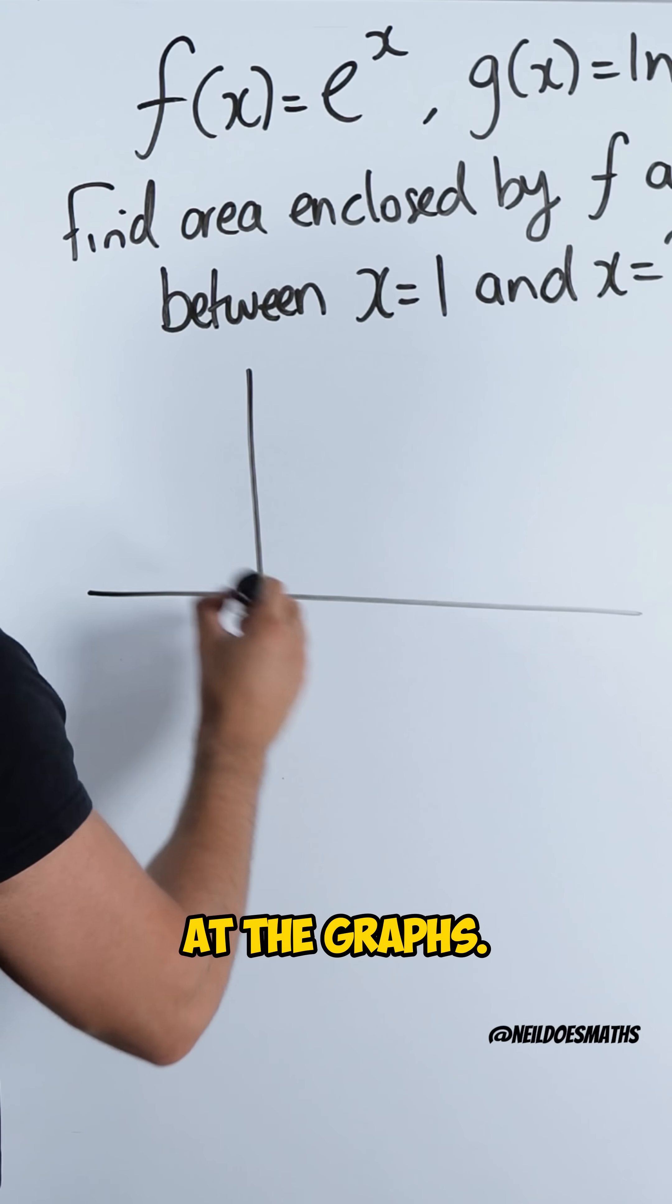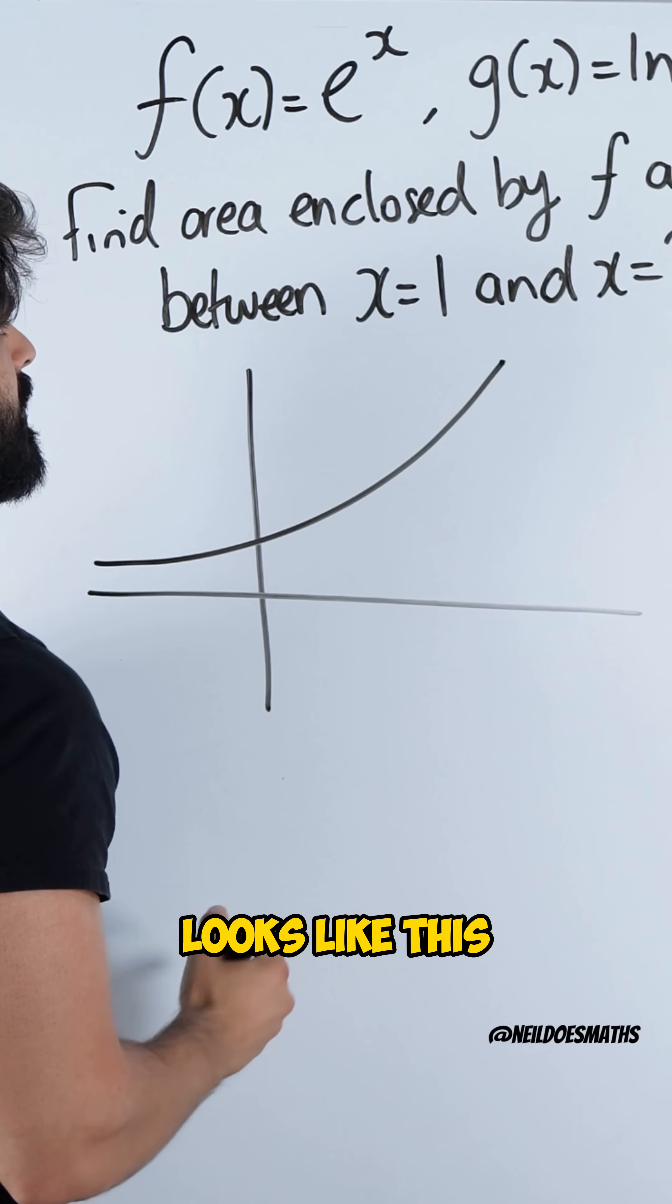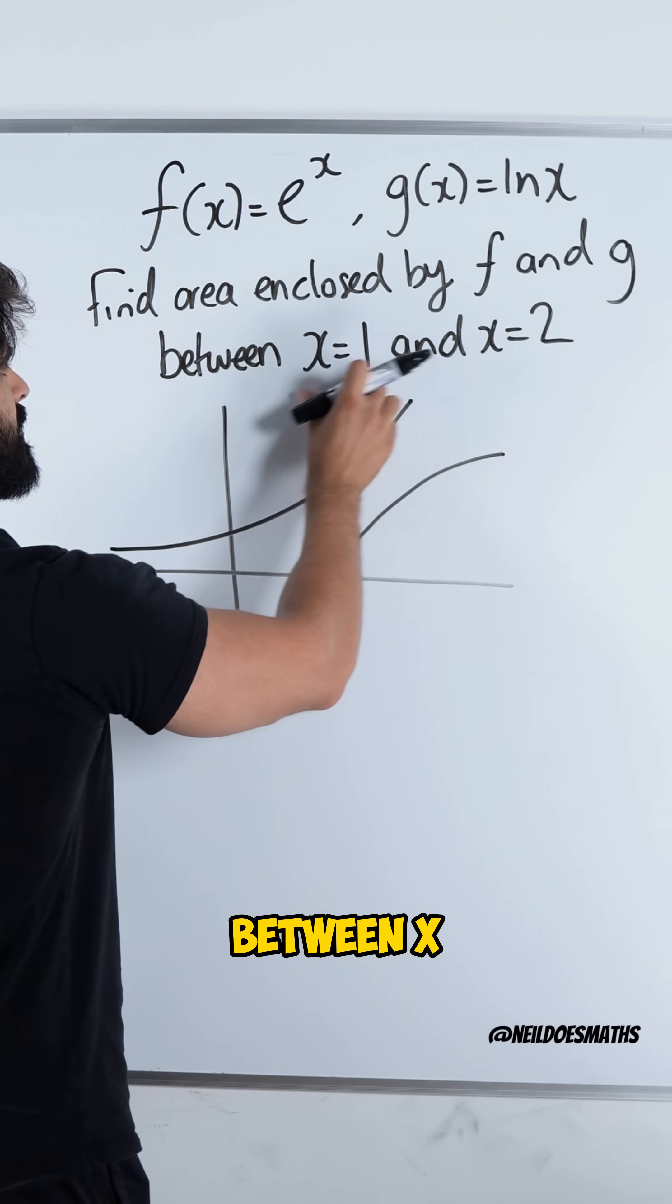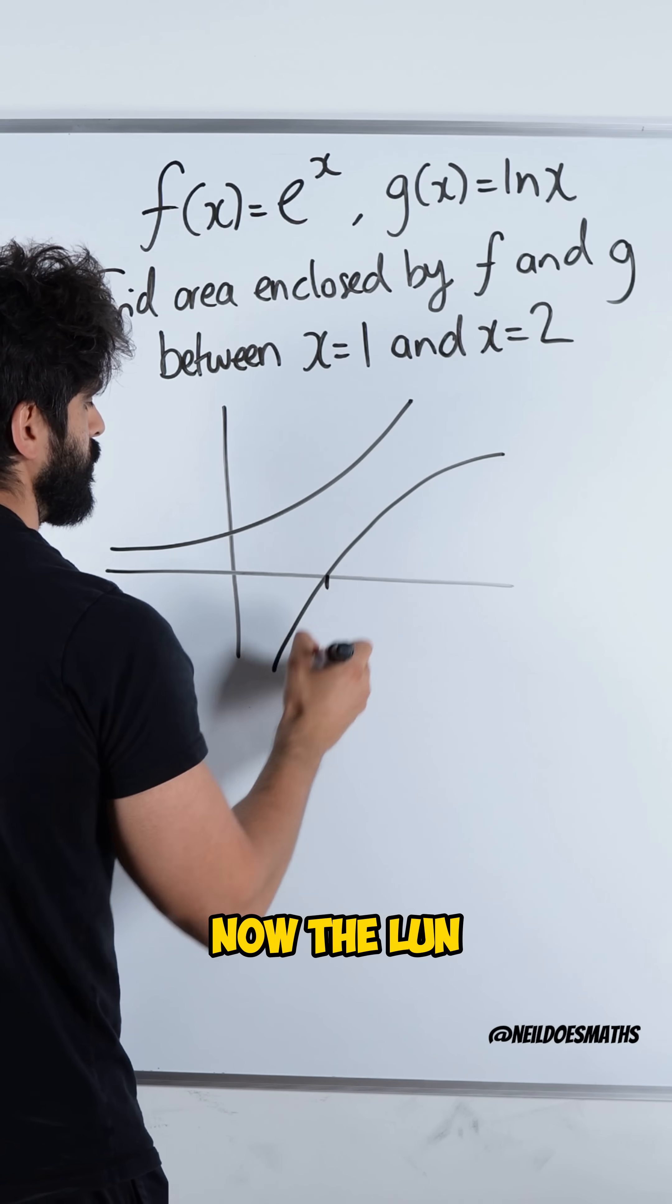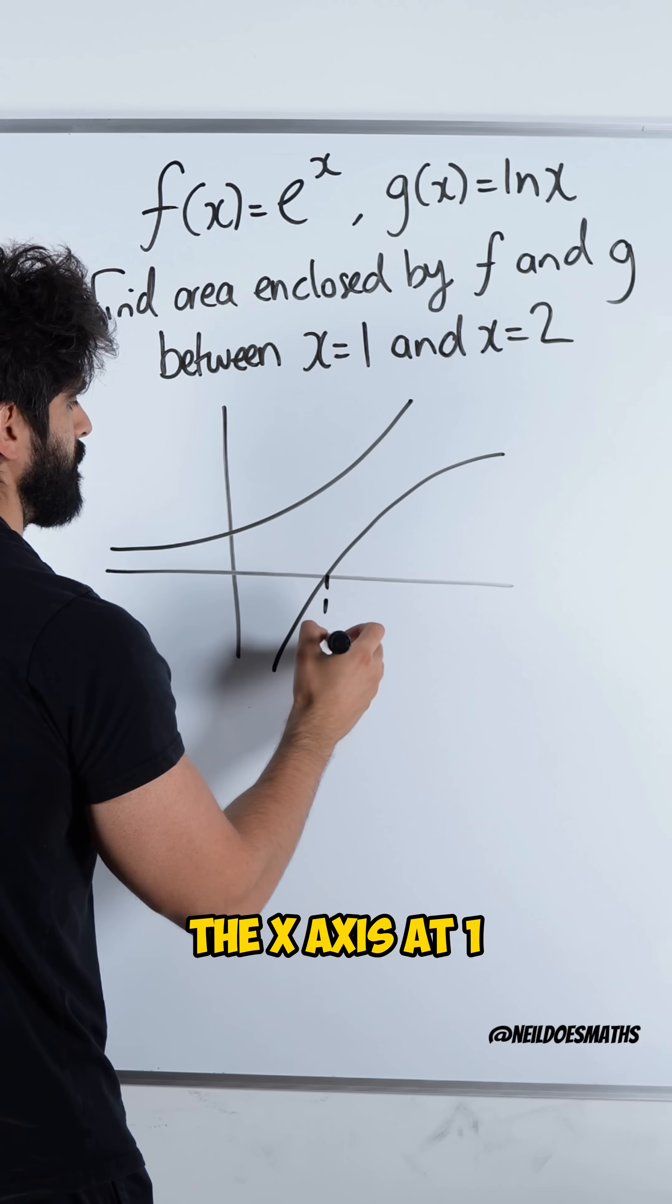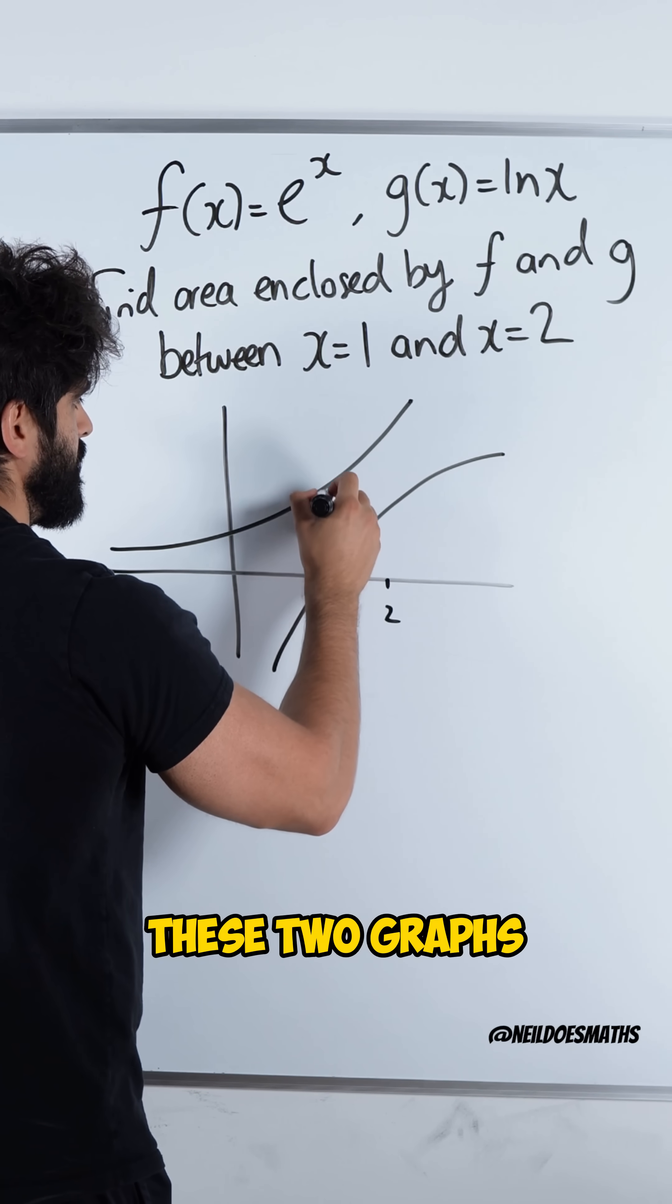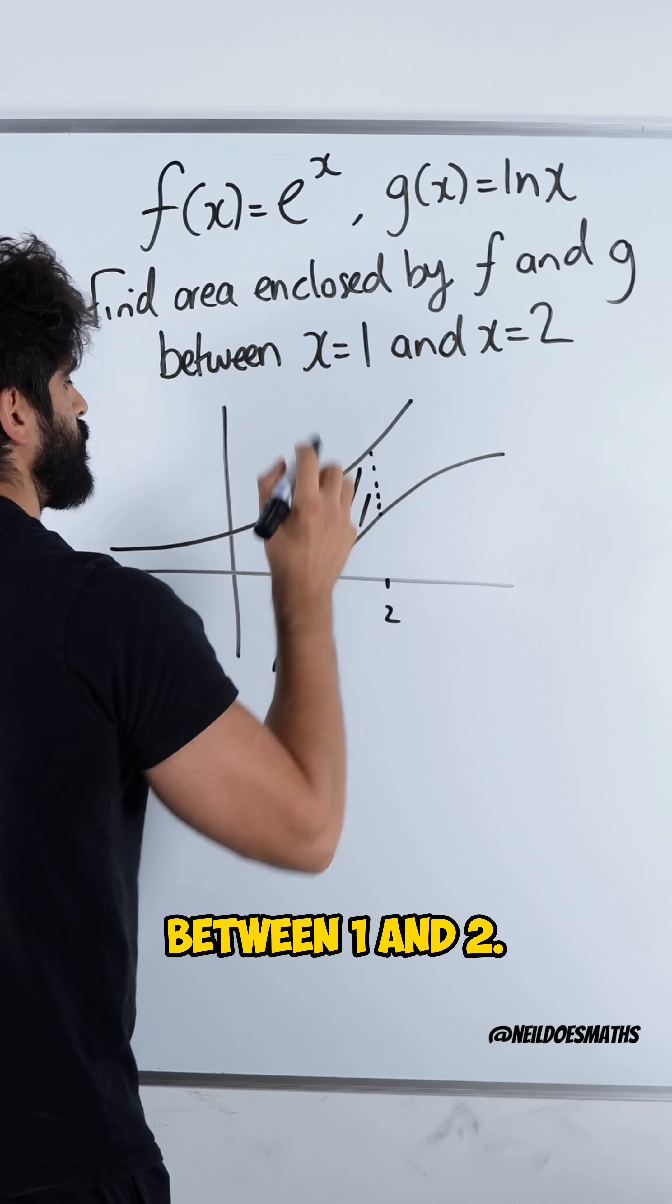So find the area enclosed by the function f and g between x equals 1 and x equals 2. Now let's take a look at the graphs. e to the x looks like this, and ln x looks like this. Now they want us to find the area between x is 1 and x equals 2. Now the ln graph crosses the x-axis at 1, and 2 is over here. So it wants the area between these two graphs, between 1 and 2.